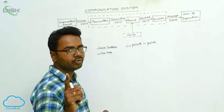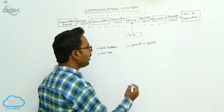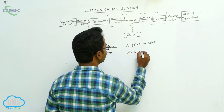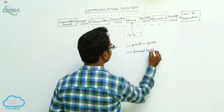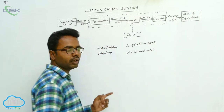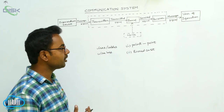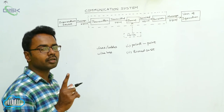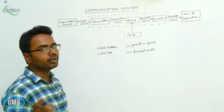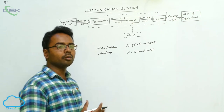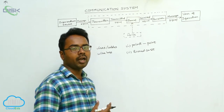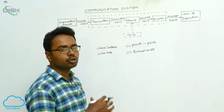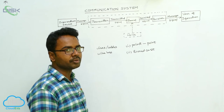In point-to-point communication, there is only one receiver for one transmitter. The second type of communication is broadcast communication. In broadcast communication, for one transmitter there are a number of receivers. Examples include radio programs, television programs, and internet communication. In all these communications, there are many receivers for one transmitter.